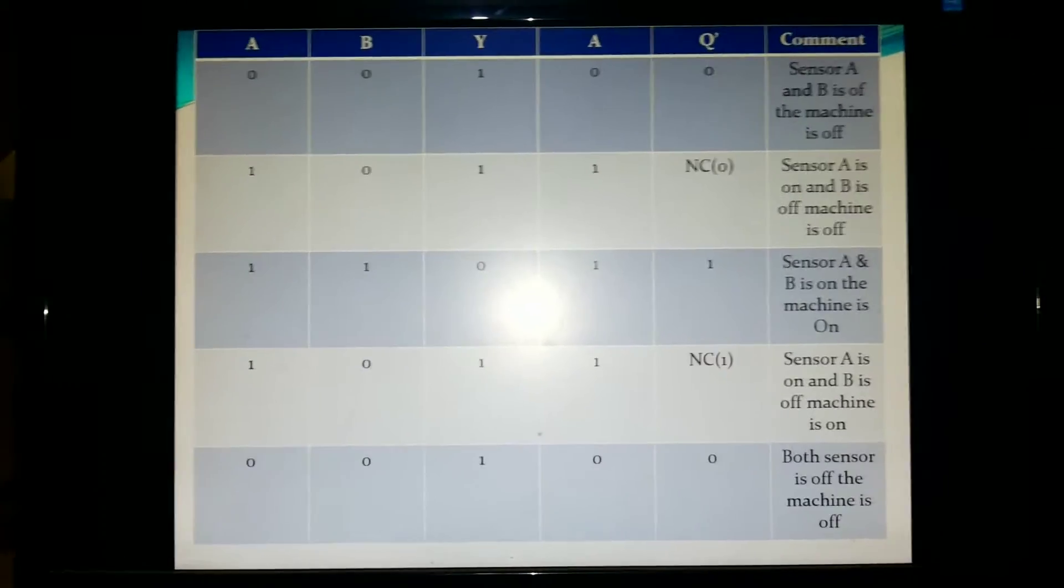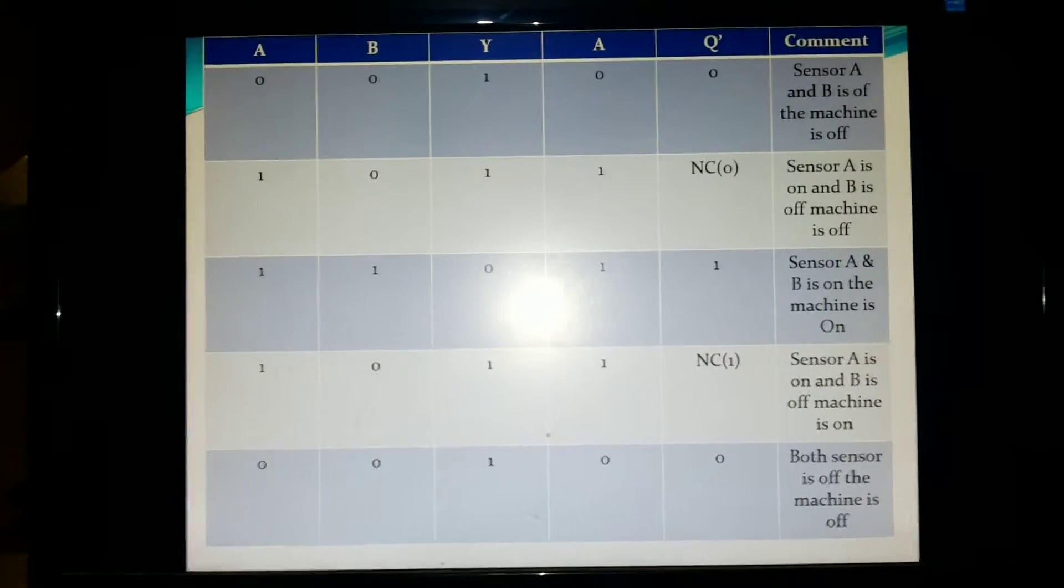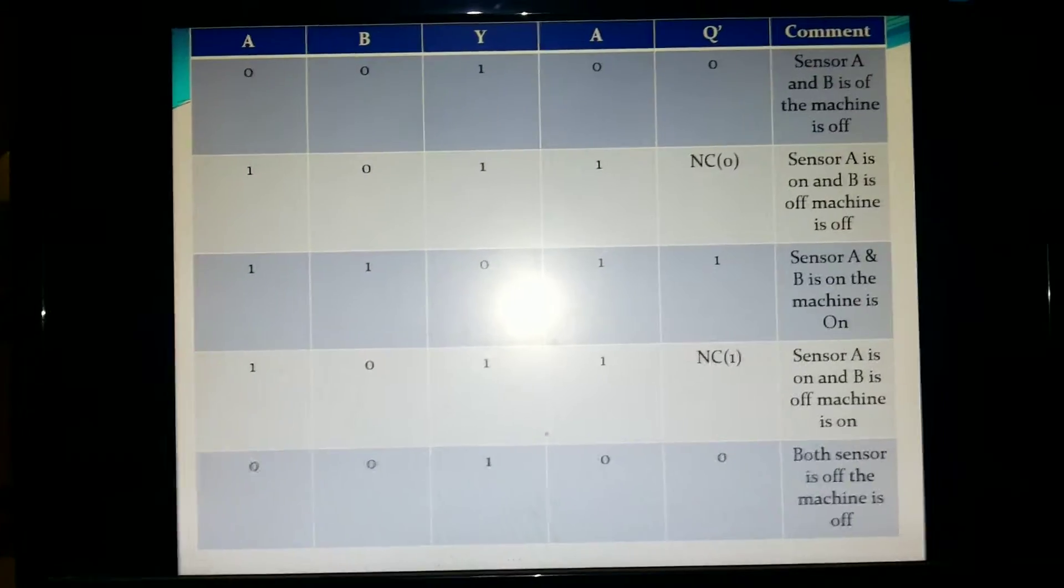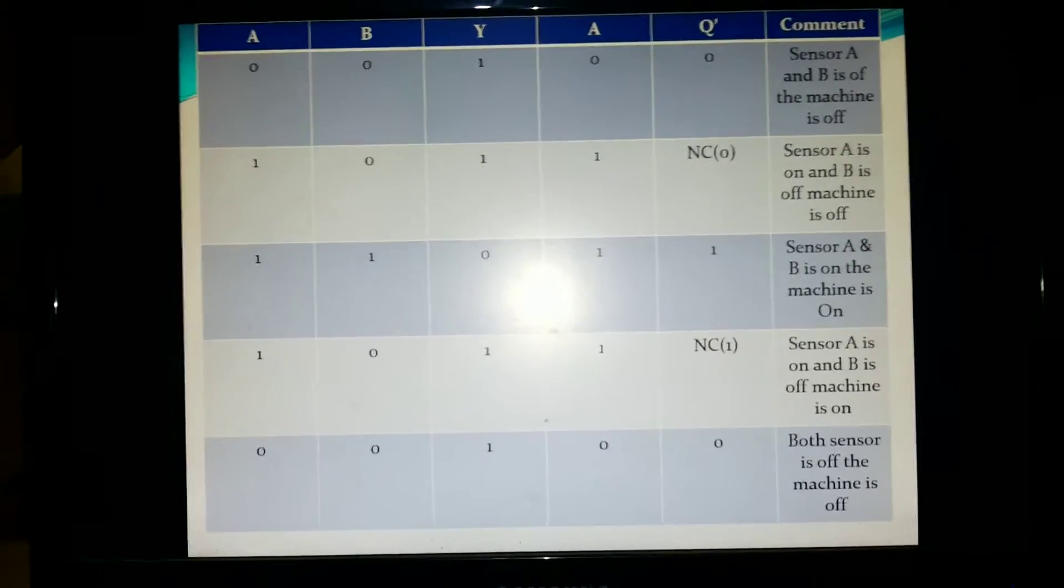Then finally, there is 0, 0 from A and B, so Y is 1 and A is 0, so that means Q bar is 0, which means both sensors are off and the machine is off.